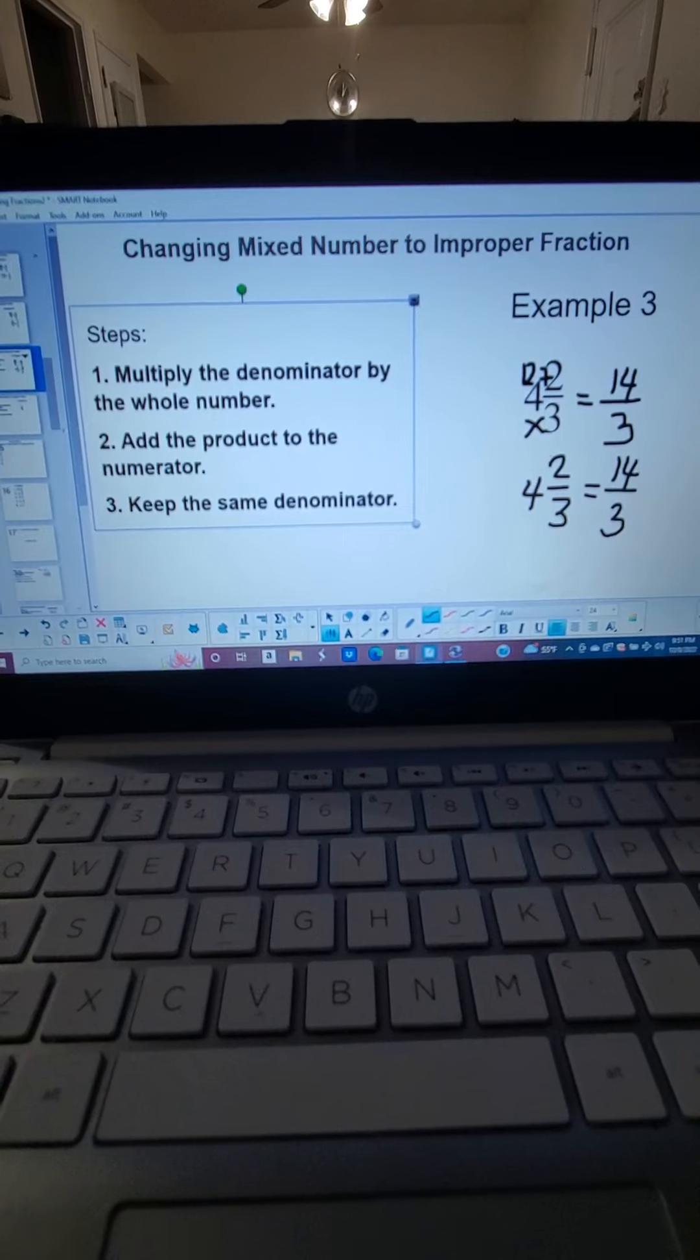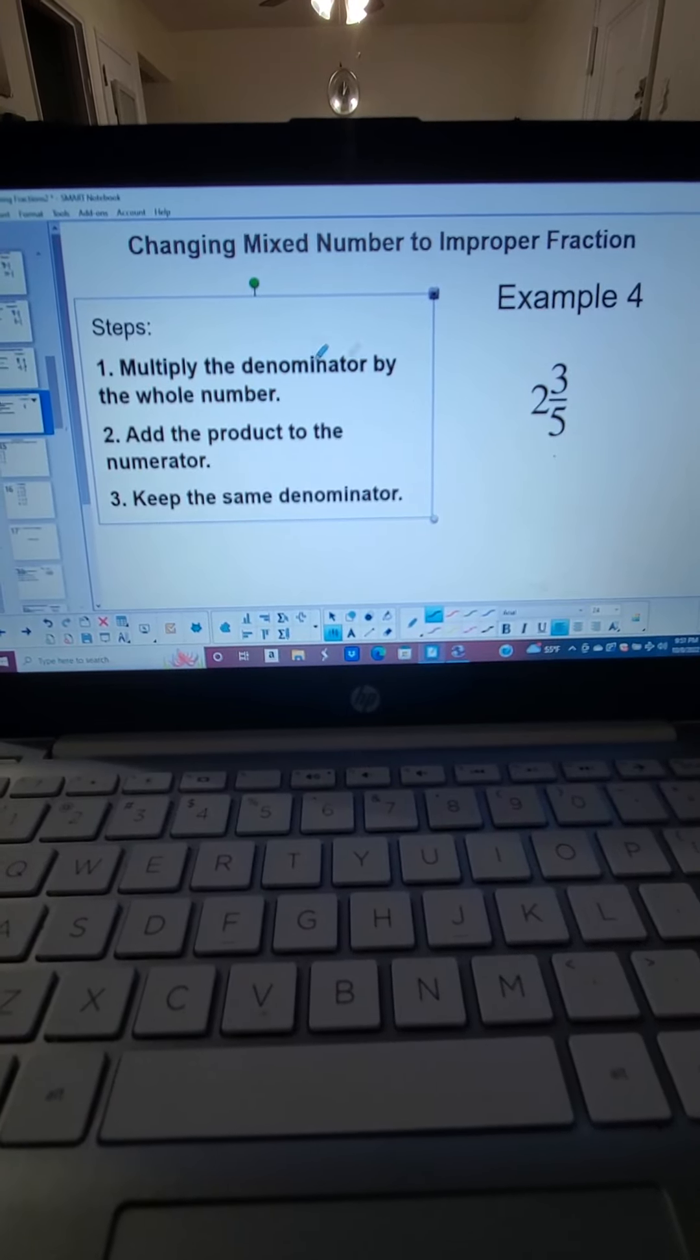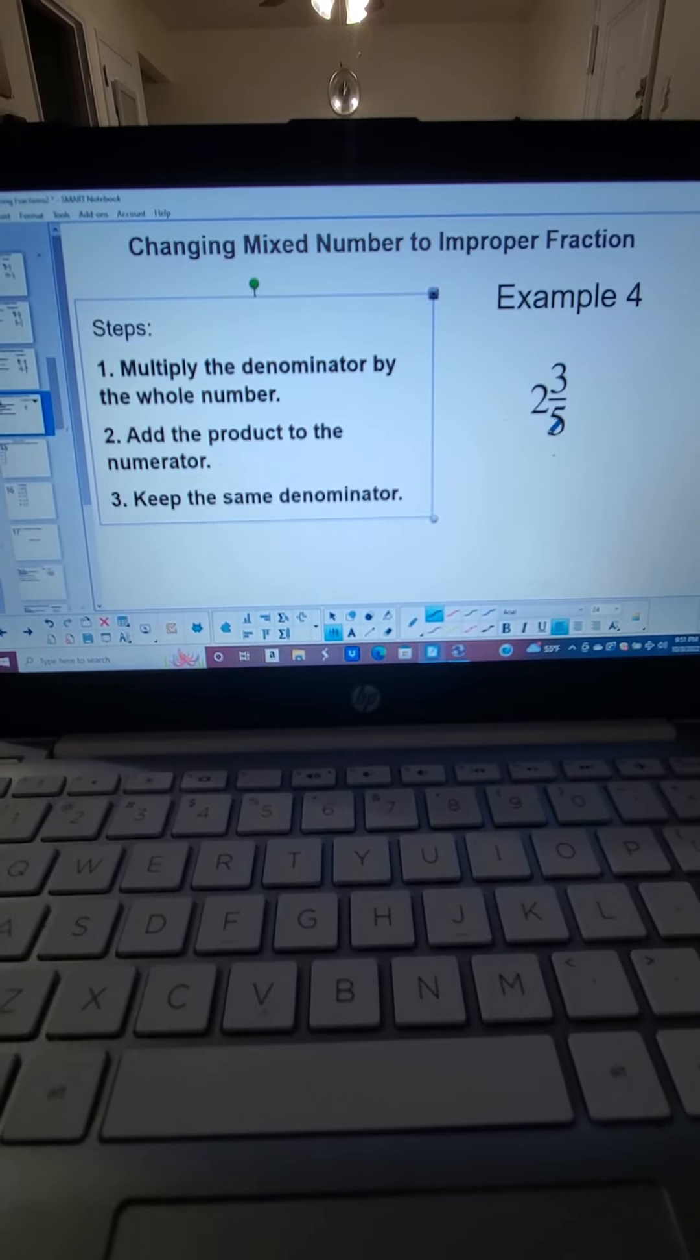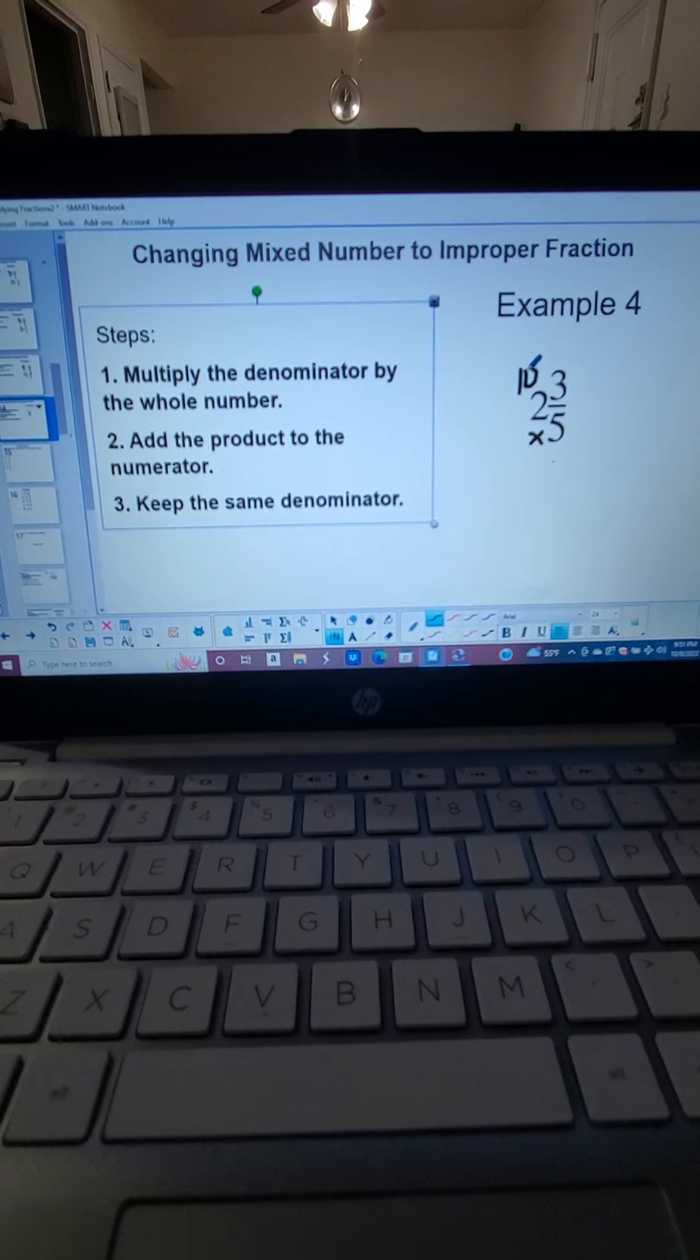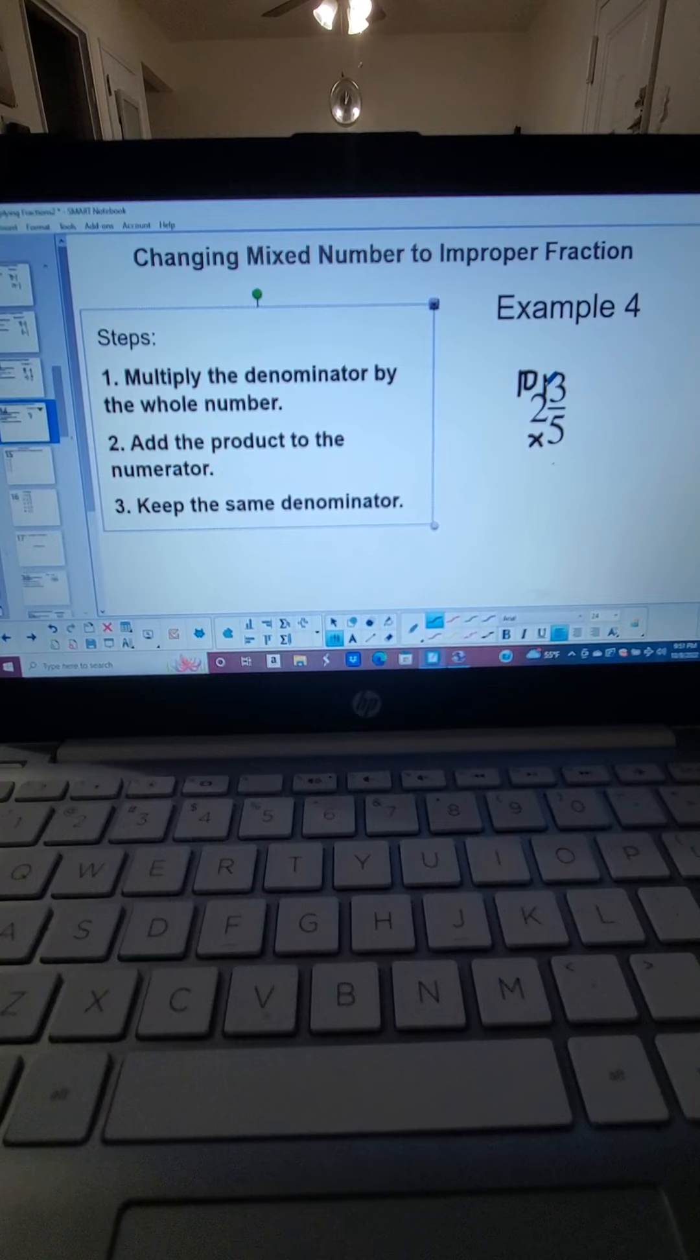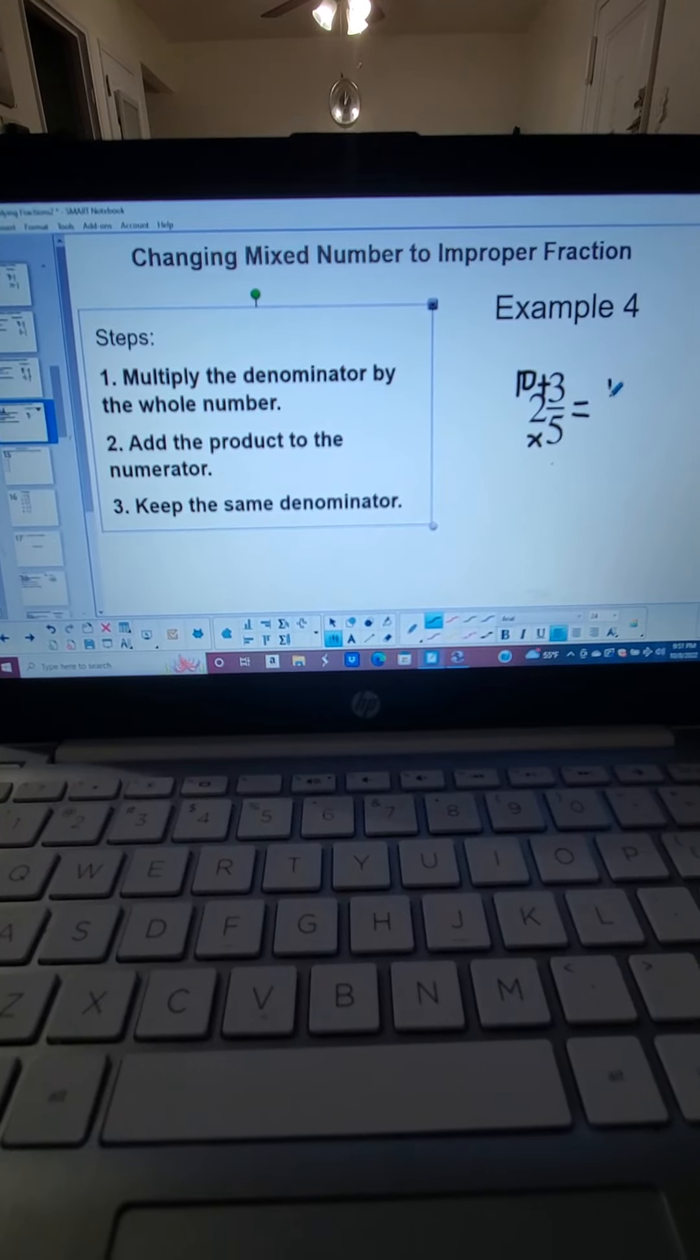We move to the fourth example. We are going to follow the same steps. Multiply the denominator by the whole number. So 5 times 2 is equal to 10. Add the product to the numerator. So 10 plus 3 is 13.